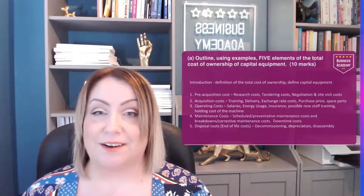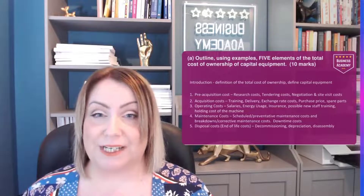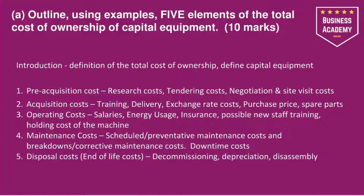Let's start on Part A of the question. Outline using examples five elements of the total cost of ownership of capital equipment. In your introduction, you should always try and define something. Here you should give a definition of total cost of ownership — that's the cost of an item over its entire life — and maybe define capital equipment, something that's high risk, high value for long-term use in the organisation. Then you might want to start your introduction by talking about an example of capital equipment.